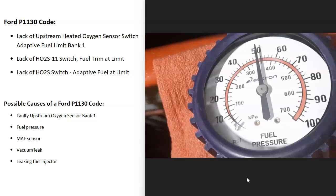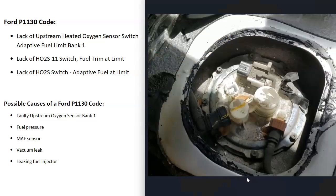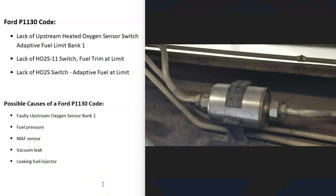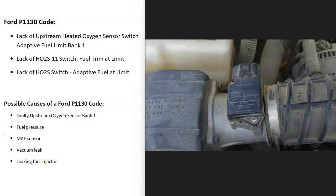The next possible cause is a fuel pressure problem, although a fuel pressure issue usually causes problems on both banks — not just one side of the engine. You can use a fuel pressure gauge and check the pressure at the fuel rail. Check what your rated fuel pressure is supposed to be — for example, if your Ford should be at 65 PSI and you're getting 50, there's an issue, likely a bad fuel pump or clogged fuel filter.